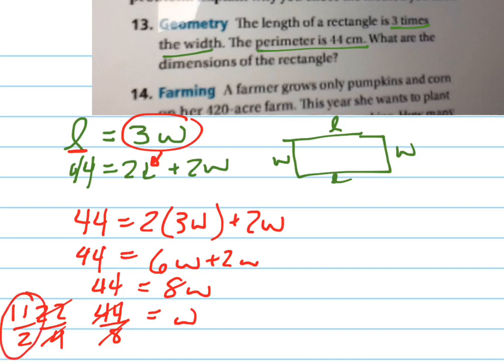And if 11 halves is the width, the length is equal to 3 times 11 halves, which is 33 halves. So there's my length. My width is 11 halves.